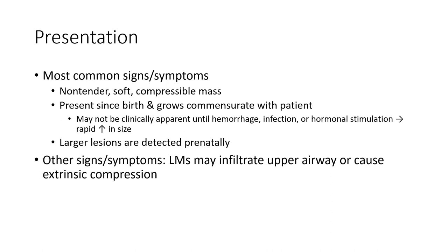Most common signs are simple: non-tender, soft, compressible mass. It may not be clinically apparent until hemorrhage, infection, or other stimulation leading to rapid increase in size. Larger lesions are detected prenatally. Lymphatic malformation may infiltrate upper airway causing extensive compression.